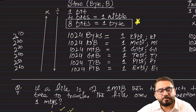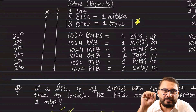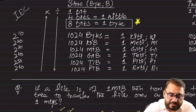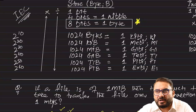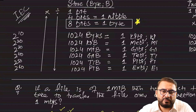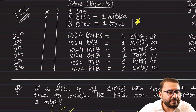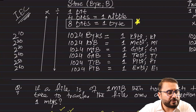2 to the power 10 becomes 1024 bytes, which is one kibibyte, and the unit is Ki. Remember, this is IEC — International Electro-Technical Commission — not SI. 2 to the power 20 is 1024 kibibytes, which is one mebibyte, unit Mi. Then 2 to the power 30 is 1024 mebibytes, which is one gibibyte, unit Gi.